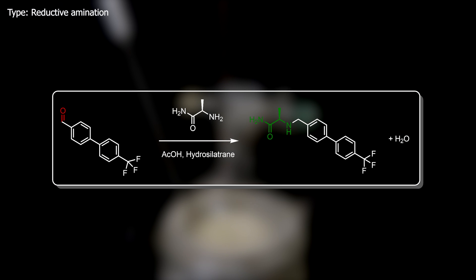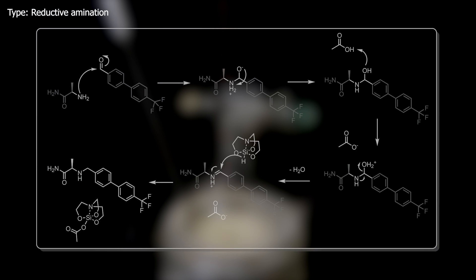In this reaction, the amine and the aldehyde react to form the corresponding secondary amine after reduction by hydrosilatrane. How it works is we have a nucleophile, the amine of alaninamide, which attacks the electrophilic aldehyde, resulting in this intermediate that undergoes a proton transfer to form this amine and hydroxyl.